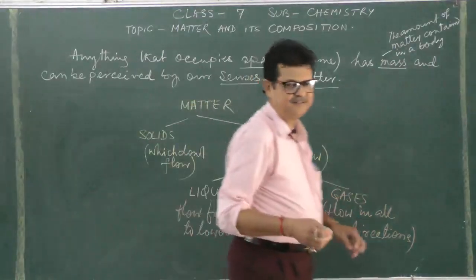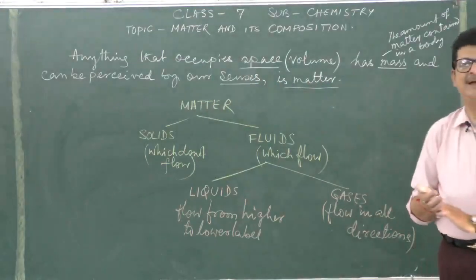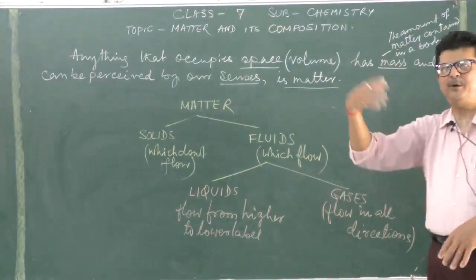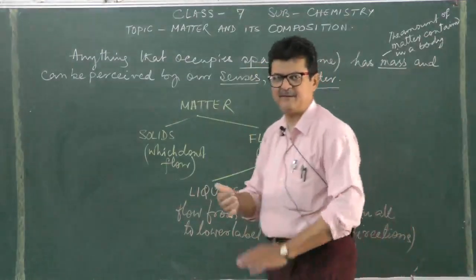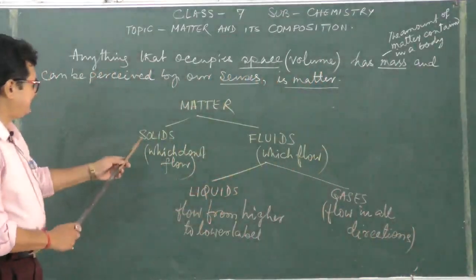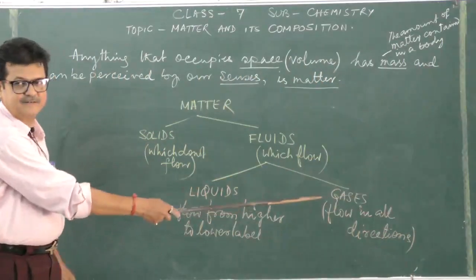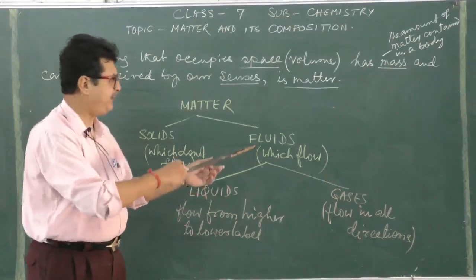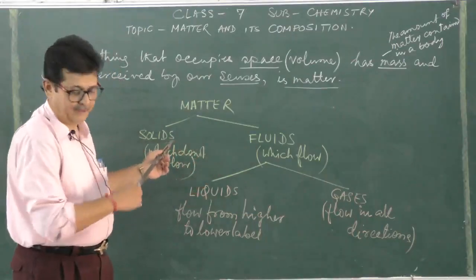Besides these three states, there are two more states. That is plasma state and Bose-Einstein condensate. You will be doing it in the higher classes. Basically there are three states, solids, liquids and gases. Liquids and gases, since they flow, they are considered as fluid. Solids do not flow.